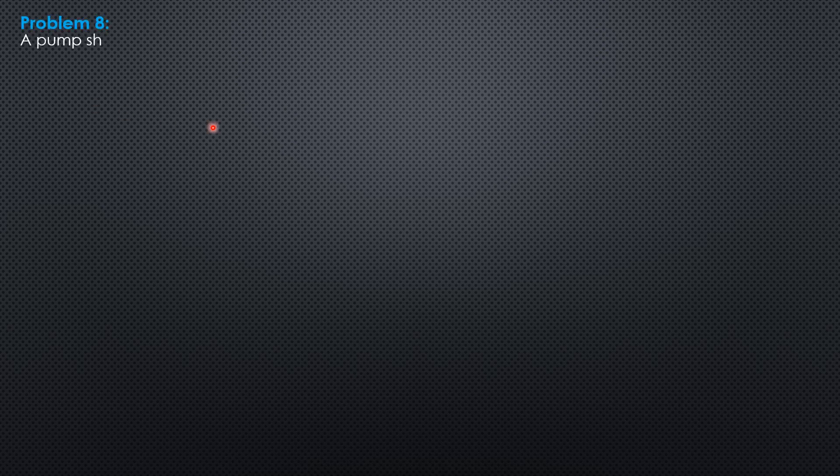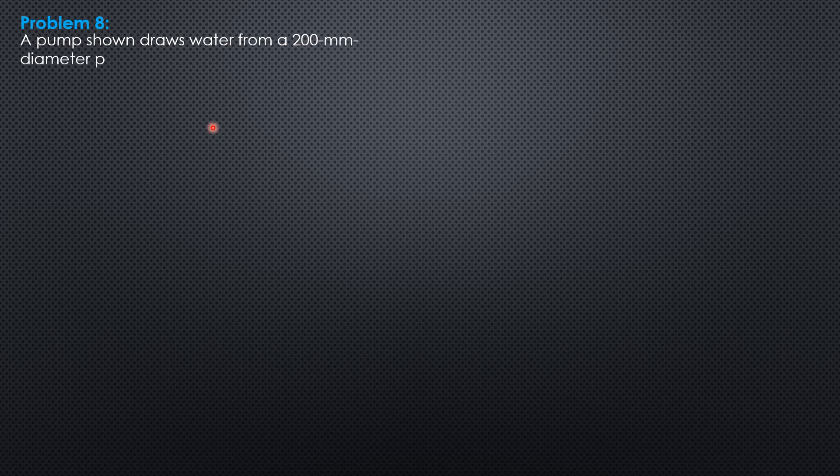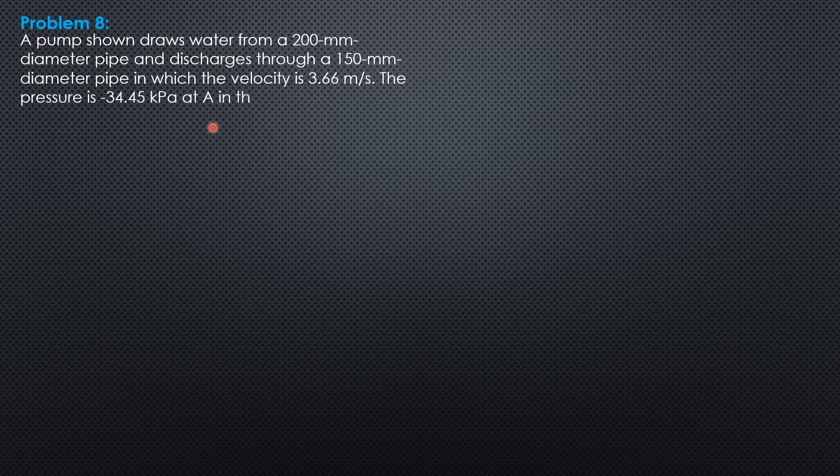Problem 8. A pump shown draws water from a 200mm diameter pipe and discharges through a 150mm diameter pipe in which the velocity is 3.66 meters per second.